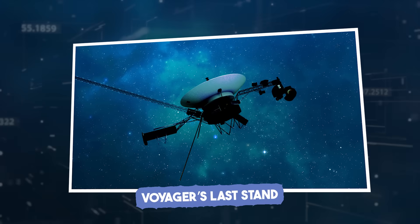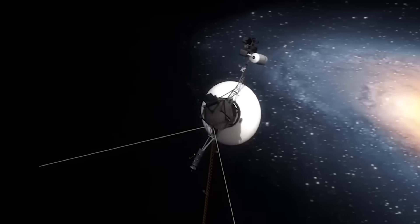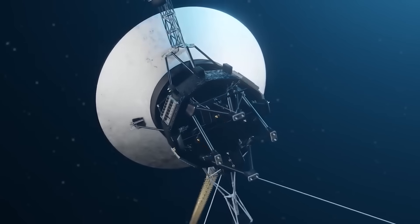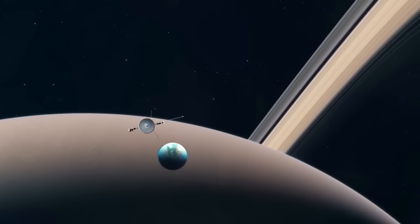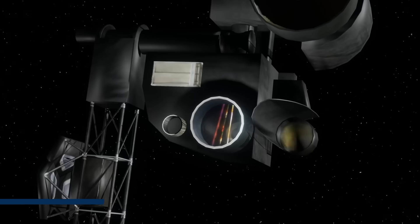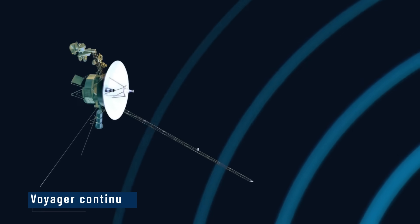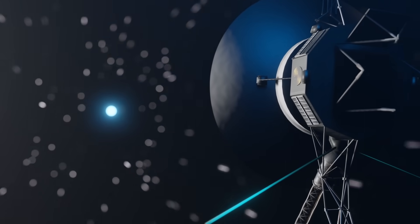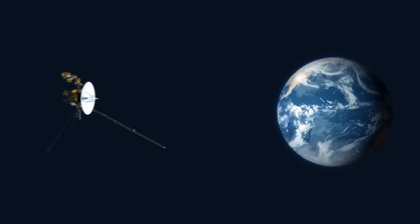Voyager's last stand. Voyager 1 is now over 40 years old, far beyond its expected lifespan. Its power source, a radioisotope generator, is slowly fading, and many instruments have been shut down to conserve energy. Yet, despite its age and distance, Voyager continues to send vital data to us from the edge of interstellar space. The spacecraft's endurance is a tribute to human engineering and determination.